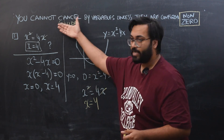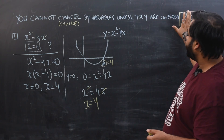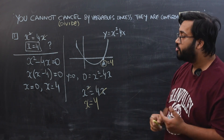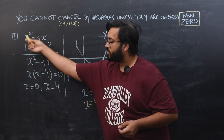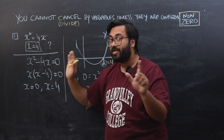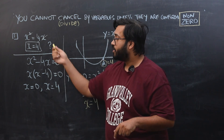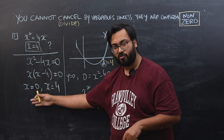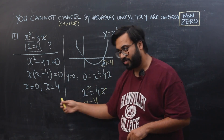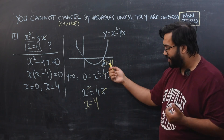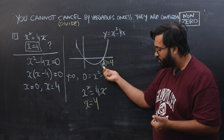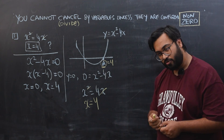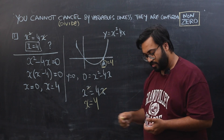So for the same equation, different approaches are possible depending on what the question gives you. You cannot cancel with a variable unless you are sure it is non-zero. If no data is given, you cannot assume x is non-zero — you must solve for both values. But when a diagram confirms a point is non-zero, you are permitted to cancel.